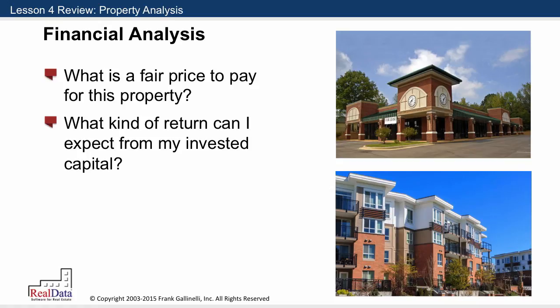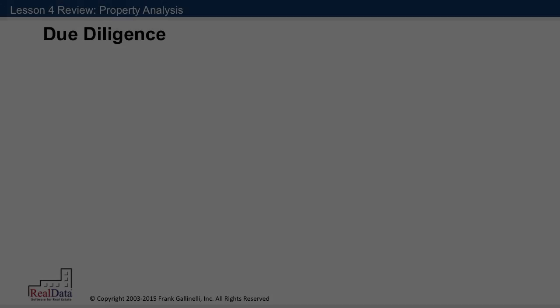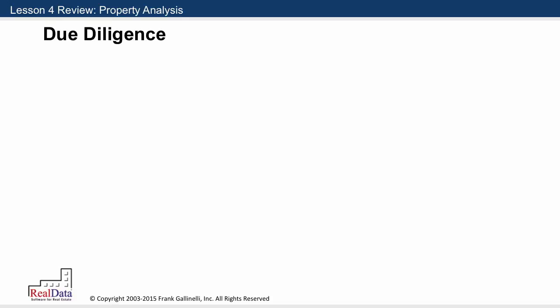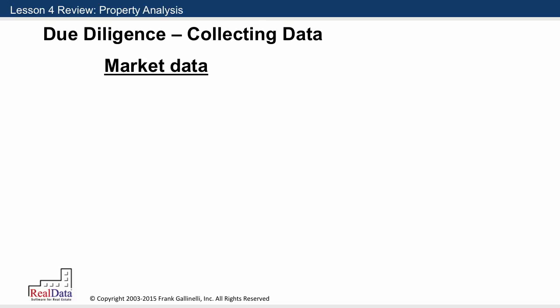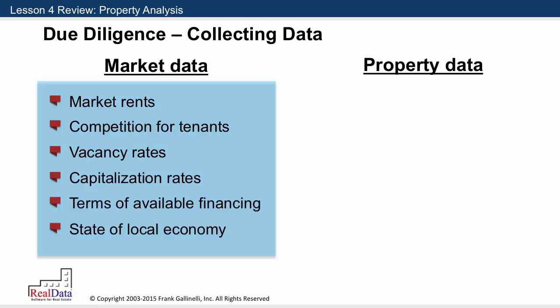To do that sort of analysis, you're going to begin, as we discussed in the previous lesson, with a process that we call due diligence. As we discussed in that lesson, due diligence begins with collecting data — data about the market in which this property resides and about the property itself. The market data would include items such as market rents, competition for tenants, vacancy rates, cap rates, financing terms, and the general condition of the local economy.